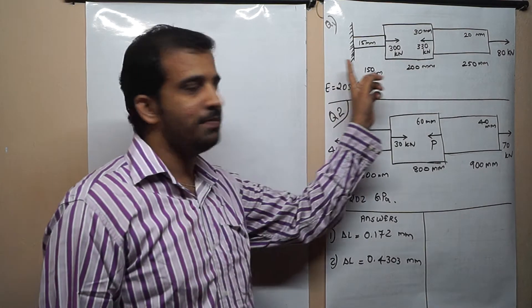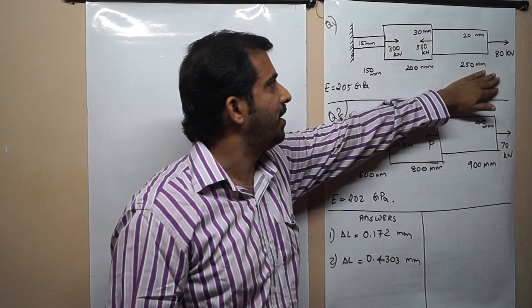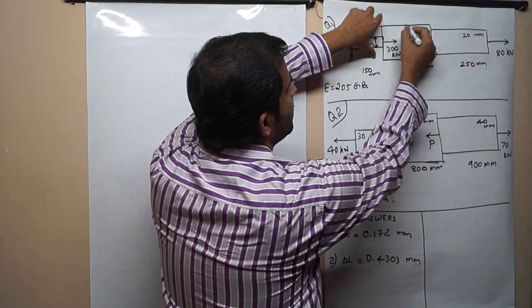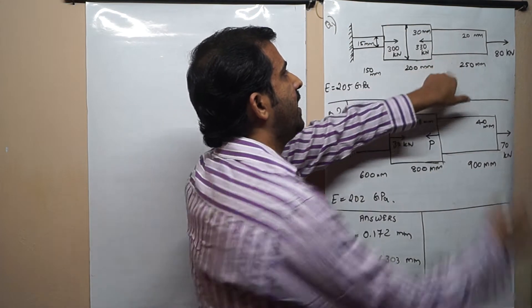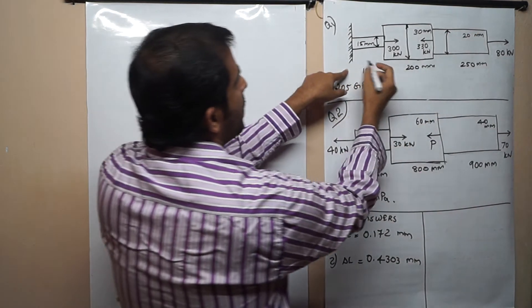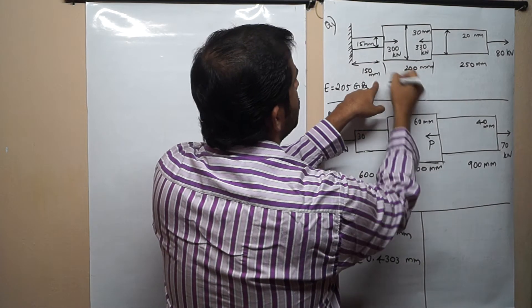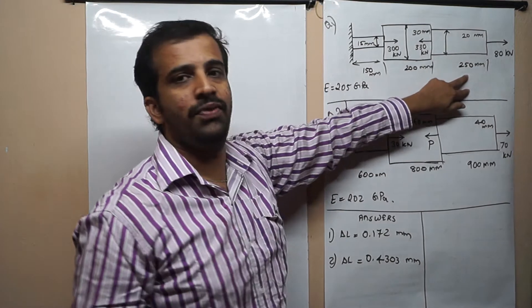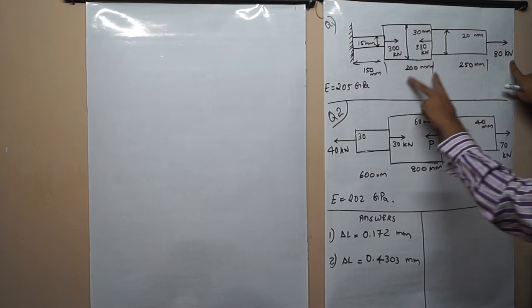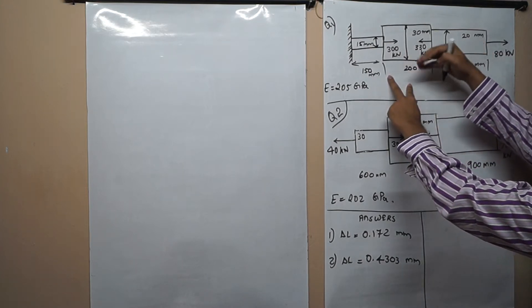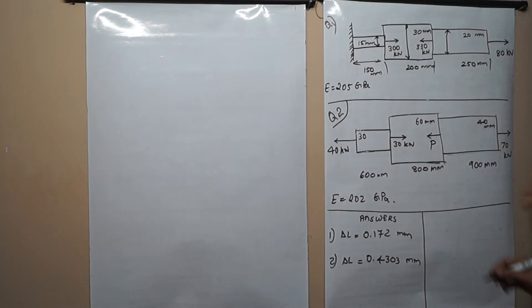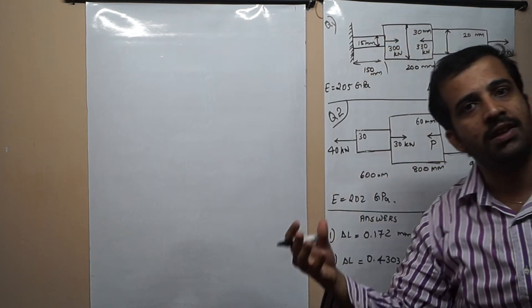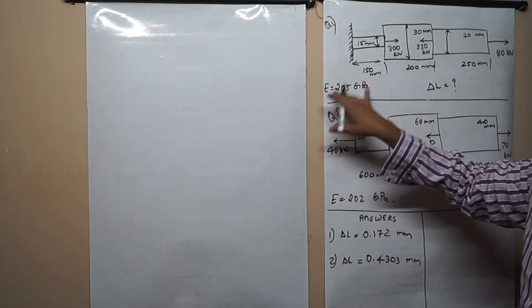There is a stepped bar. One end of the bar is fixed and the other end is free. The diameter of the first section is 15 mm, the second section is 30 mm, and the last section is 20 mm. The lengths are 150 mm, 200 mm, and 250 mm respectively. Axial loads are acting: 80 kN outwards, 330 kN inwards, and 300 kN to the right. It is asked to find the maximum elongation under axial forces — whether compression or tension. Young's modulus is 205 GPa.